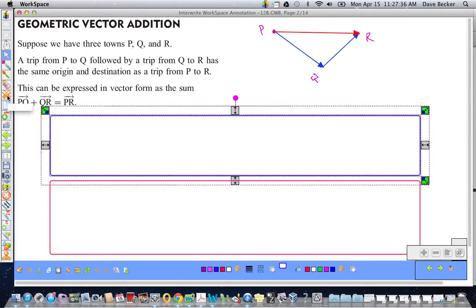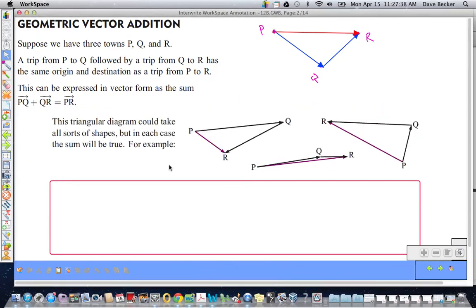So, let's take a look at the surprises underneath here. You know, the P's, Q's, and R's really could be anywhere. And we could say P to Q, Q to R, the resultant is PR.